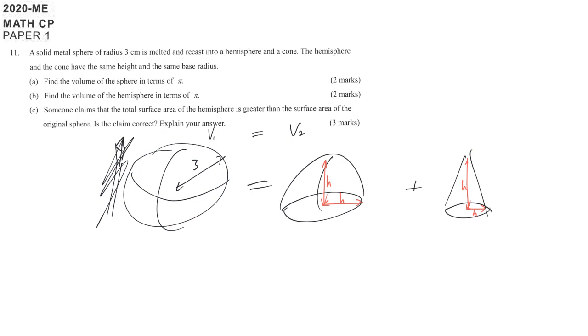So we are going to translate part by part. For sphere: 4 over 3 pi r power of 3. For hemisphere: 2 over 3 pi, here r is h power of 3. For a cone: 1 over 3 base area, that means pi h squared times the height h.